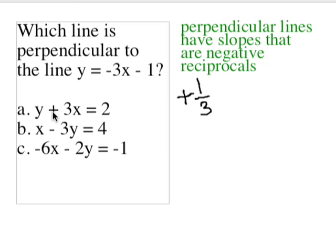Well, looking at a, to put this in y equals mx plus b form, all I do is move the 3x over to the other side of the equal sign. That becomes a negative 3x. That's not positive 1 third.